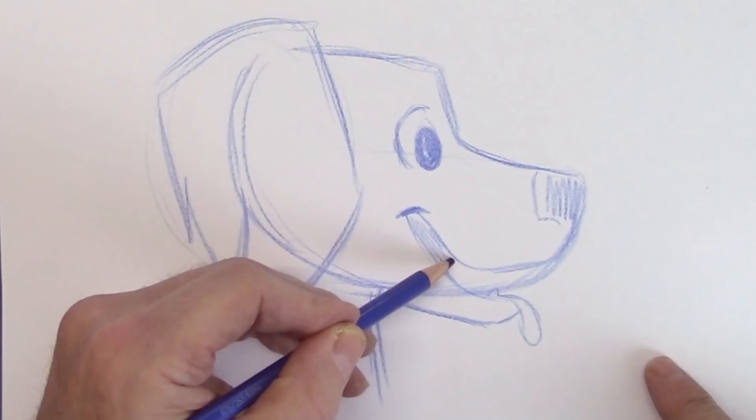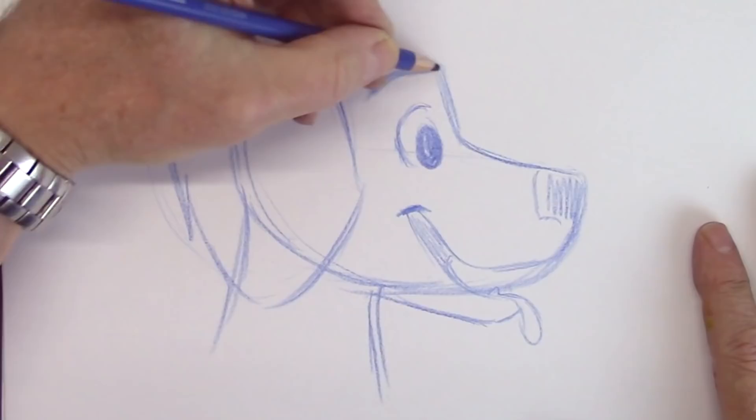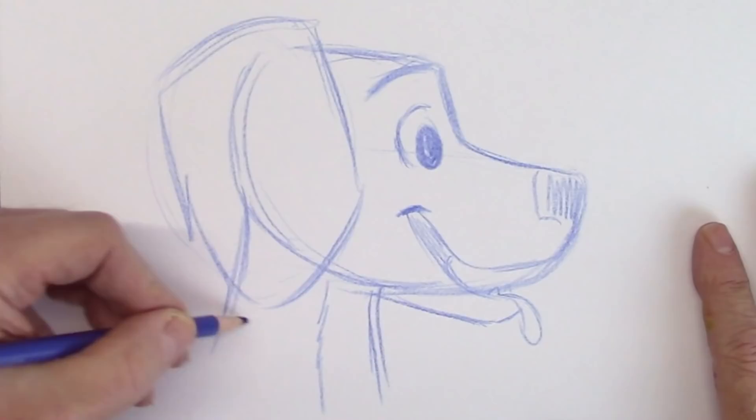Alright, another little tooth back there. Let's bring that eyebrow up high, and flatten the back of the head. Give it a little bit of fur lining over there. Spencer.